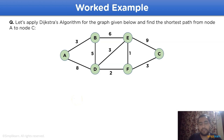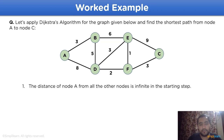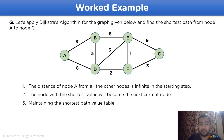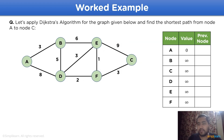Before we begin with the solution, let's note some important points. First, the distance of node a from all other nodes is infinite at the starting step. Next, the node with the shortest value will become the next current node. Also, this graph is used to maintain a proper shortest path value table, which will be very helpful during the solution. To begin, we will make a shortest path table with three columns: node, value, and previous node.